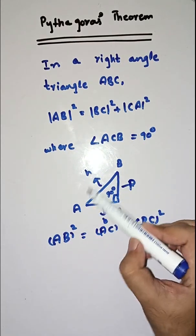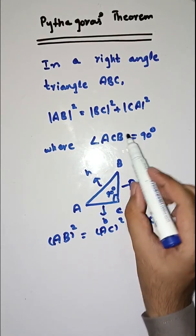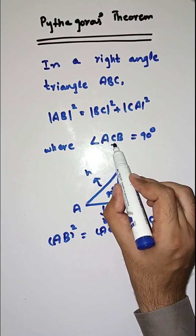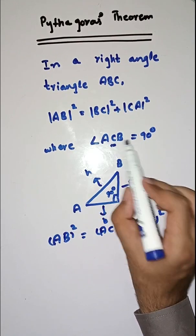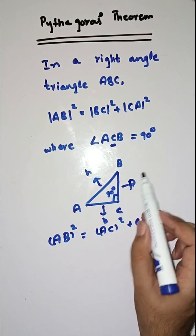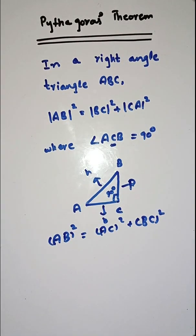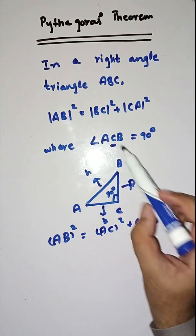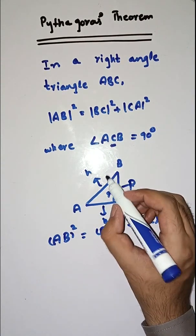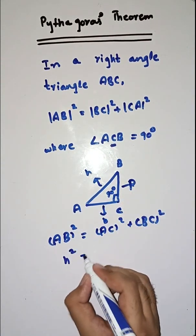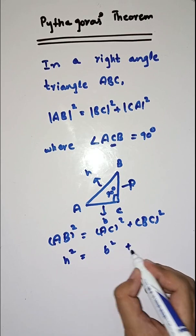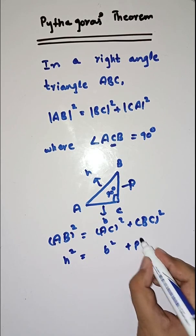Where angle ACB, now if you have three letters then the C is equal to 90. Pythagoras theorem: hypotenuse square is equal to base square plus perpendicular square.